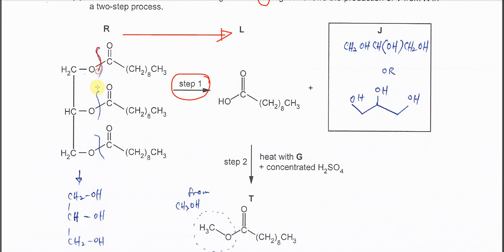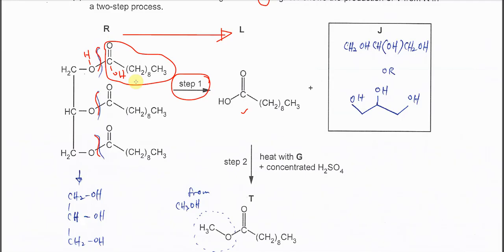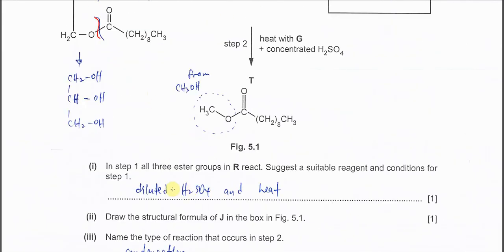When the ester bonds break at all three positions, each carbon gets an OH group and each oxygen gets an H, forming compound L. For hydrolysis, you must use dilute acid — do not use concentrated acid. Dilute acid in water together with heat will cause the hydrolysis to occur.